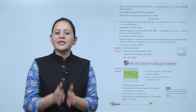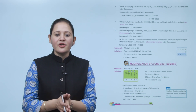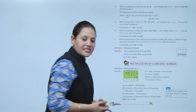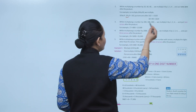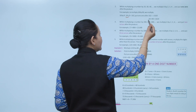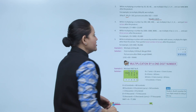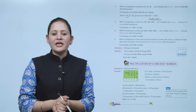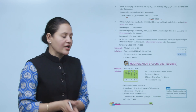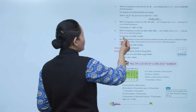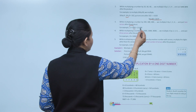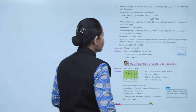When multiplying a number by 20, 30, 40, and so on, multiply by 2, 3, 4 and put one zero after the product. For example, 18 into 90: first multiply 18 by 9 to get 162, then put one zero after to get 1620. When multiplying by 200, 300, 400, and so on, multiply by 2, 3, 4 and put two zeros after. For example, 17 into 800: first multiply 17 by 8 to get 136, then put two zeros to get 13,600.